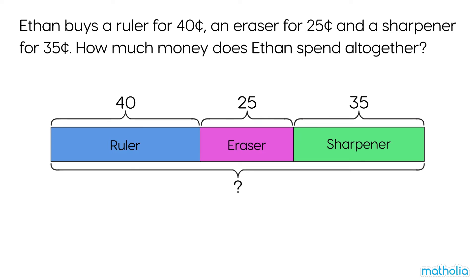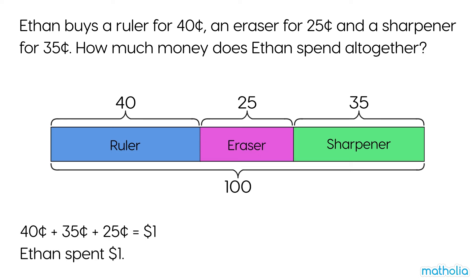The ruler is the most expensive, it's the longest bar. The eraser is the cheapest, it's the shortest bar. To find the total amount of money spent, we add 40 cents plus 35 cents plus 25 cents equals one dollar. Ethan spent one dollar.